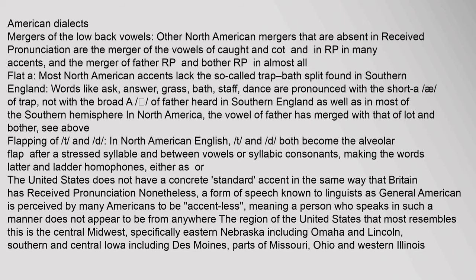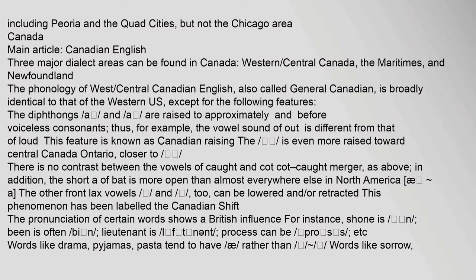The United States does not have a concrete standard accent in the same way that Britain has received pronunciation. Nonetheless, a form of speech known to linguists as General American is perceived by many Americans to be accent-less, meaning a person who speaks in such a manner does not appear to be from anywhere in particular. The region of the United States that most resembles this is the central Midwest, specifically eastern Nebraska including Omaha and Lincoln, southern and central Iowa including Des Moines, parts of Missouri, Ohio, and western Illinois including Peoria and the Quad Cities, but not the Chicago area.